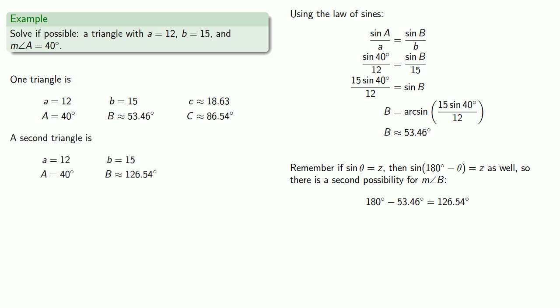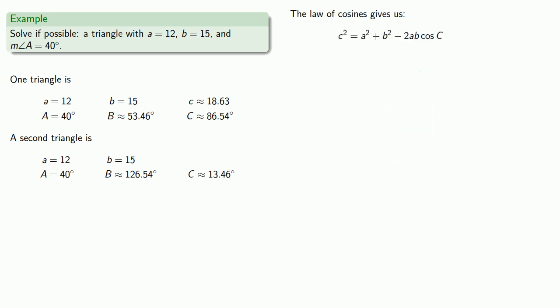Again, the measure of the three angles in a triangle must add up to 180 degrees. Since we've changed the measure of angle B, we will also change the measure of angle C. So, we'll have to solve that again. Which gives us a second possibility for the length of the side C.